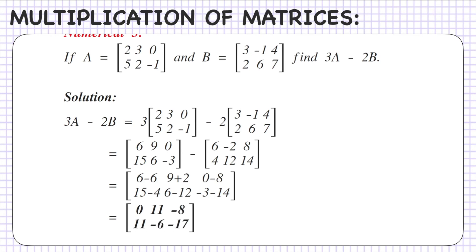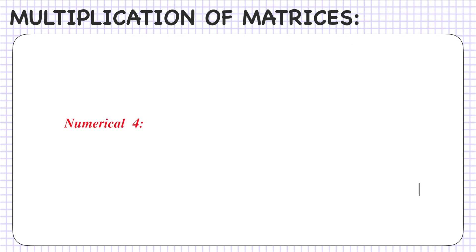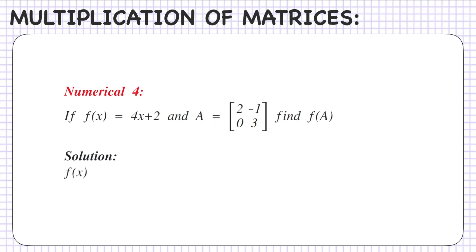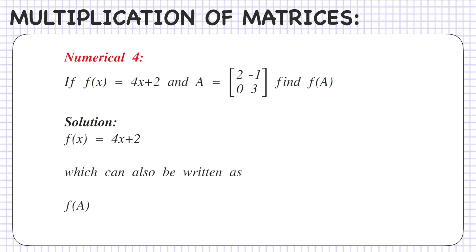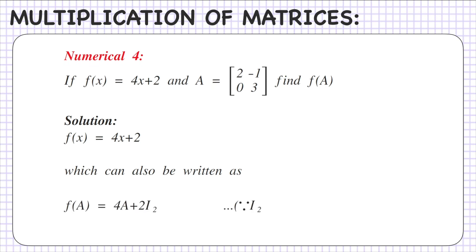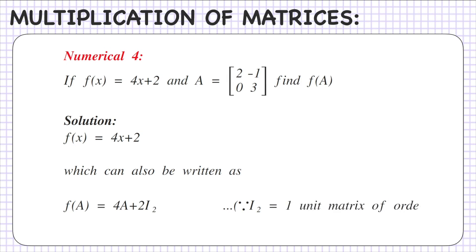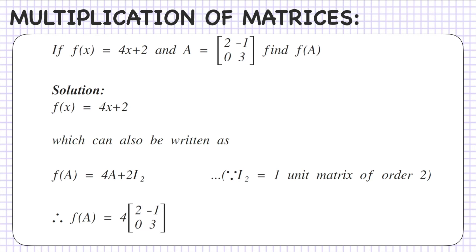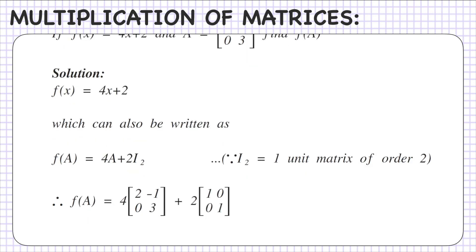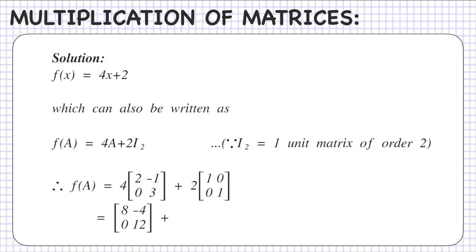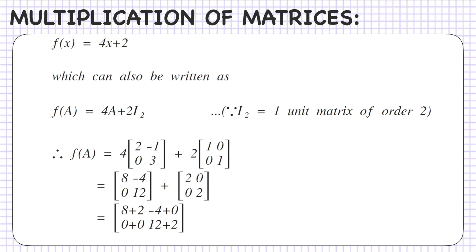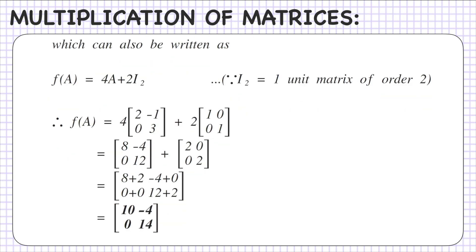One more numerical: if F(x) equals 4x+2 and A equals [2, -1; 0, 3], find F(A). We have F(A) equals 4A + 2I₂, where I₂ is the unit matrix of order 2. So F(A) equals 4×[2, -1; 0, 3] + 2×[1, 0; 0, 1] which gives [8, -4; 0, 12] + [2, 0; 0, 2] equals [10, -4; 0, 14].